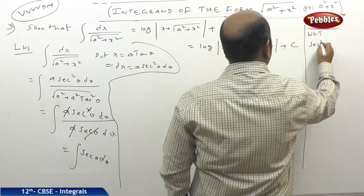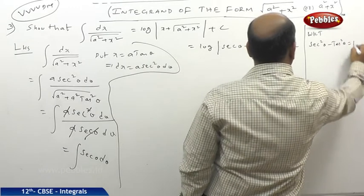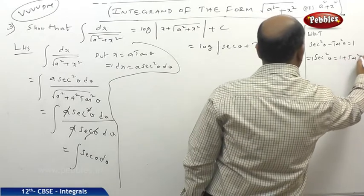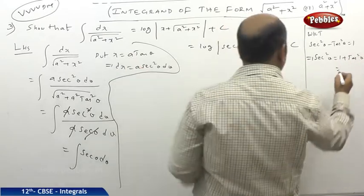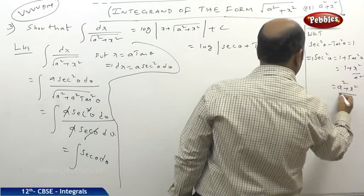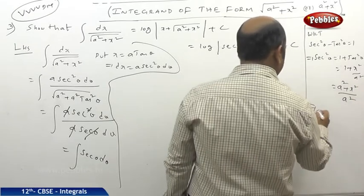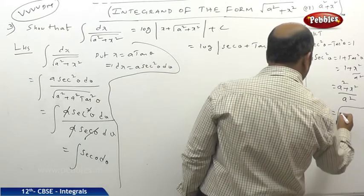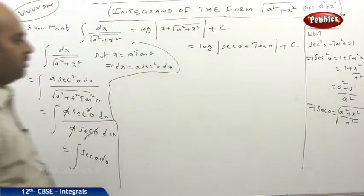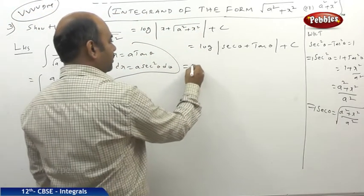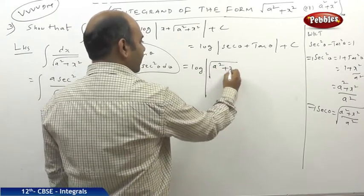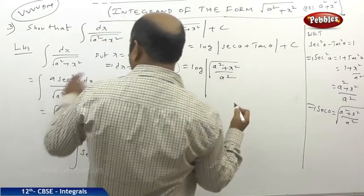We know sec²θ minus tan²θ equals 1, so sec²θ equals 1 plus tan²θ. Since tan θ equals x/a, this becomes 1 plus x²/a², which equals (a² plus x²)/a². Therefore sec θ equals under root of (a² plus x²) divided by a. This conversion is very important.